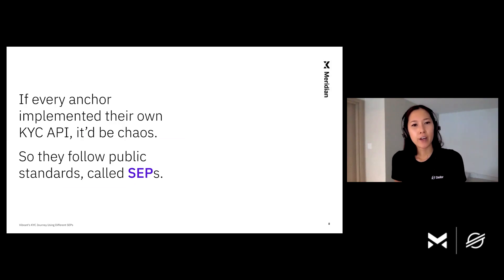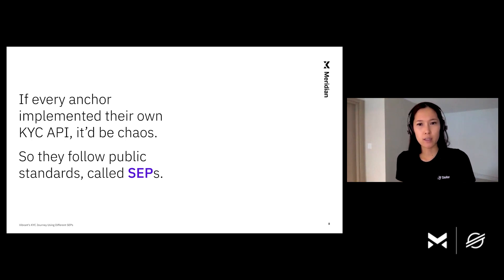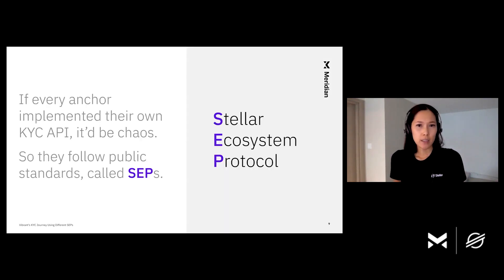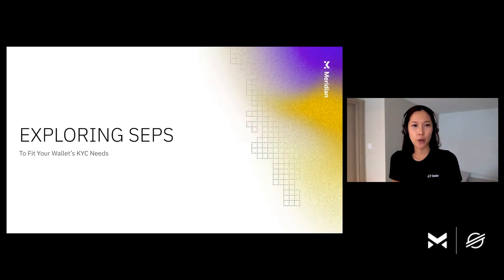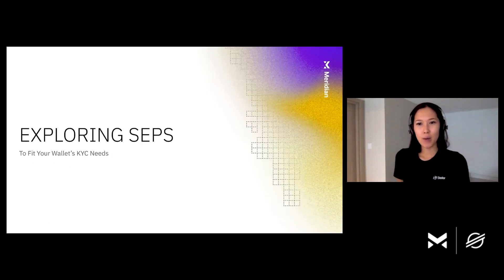If every anchor implemented their own KYC API, it will be chaos. If one anchor requires a different way of acquiring KYC than others, it will be a lot of work for both anchors and wallets to implement. So Stellar encourages anchors and wallets to follow public standards called SEPs — Stellar Ecosystem Protocols. Let's explore the SEPs that fit your wallet's KYC needs.